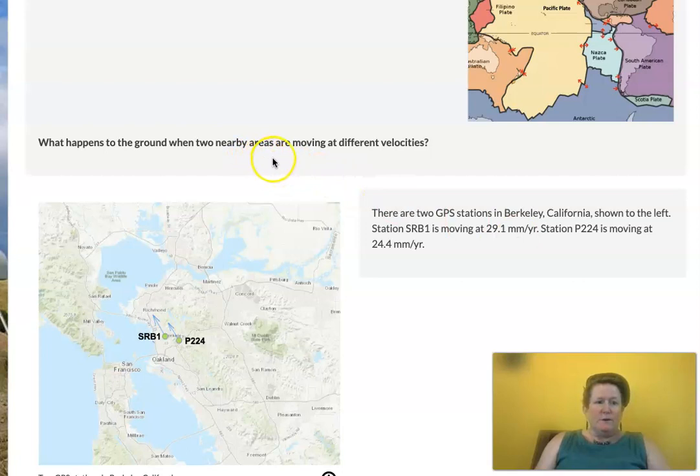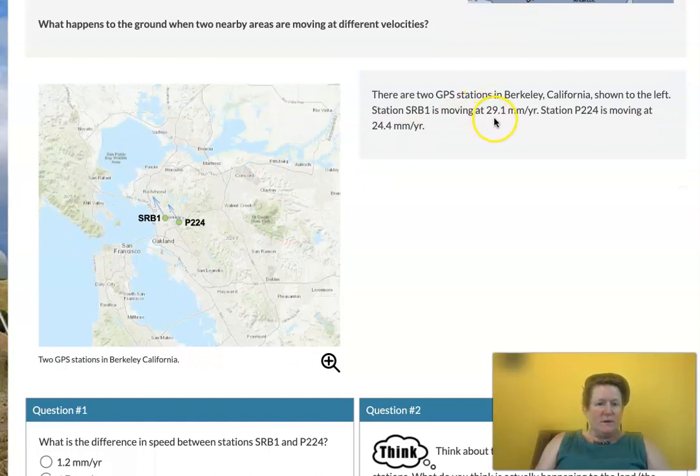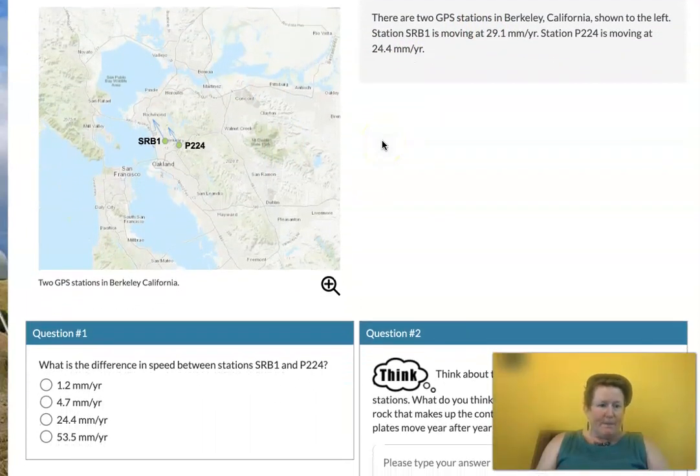What happens to the ground when there are two nearby areas moving at different velocities? There are two GPS stations in Berkeley, California shown to the left. Station SBR1 is moving at 29.1 millimeters per year. Station P224 is moving at 24.4 millimeters per year. So they're a little bit different, one's 29 and one's 24. What is the difference in speed between stations SRB1 and P224? Well I see that the numbers are very different so I can estimate here. I can say 29 minus 24 is about 5. Can I find the answer that's near 5? I'll let you think about that.